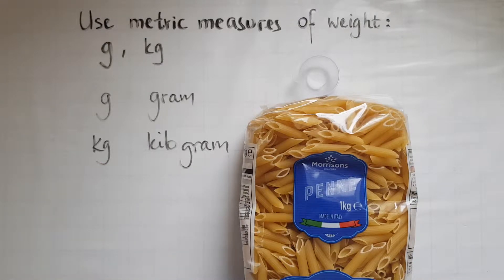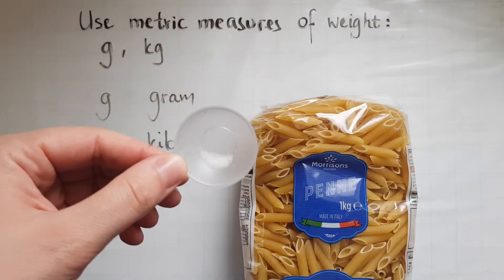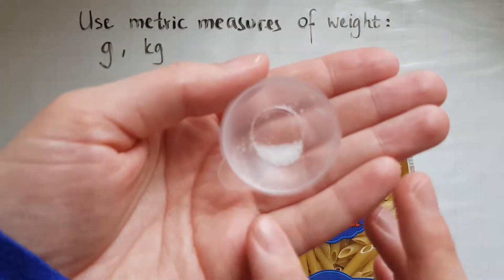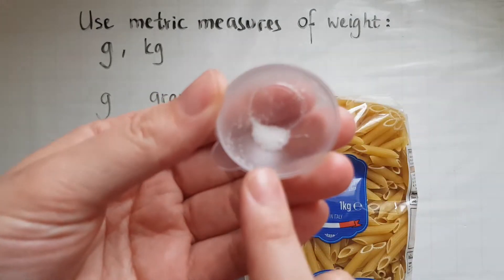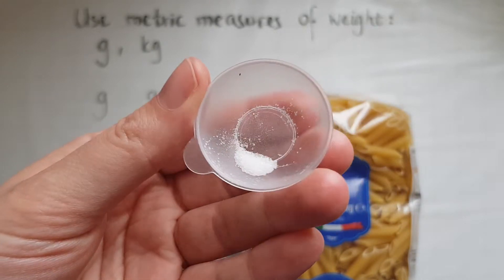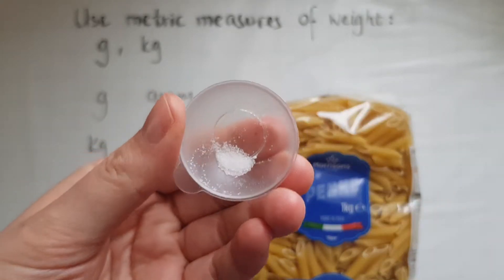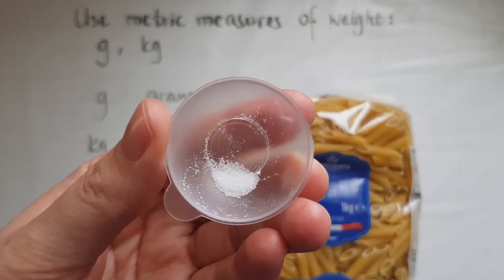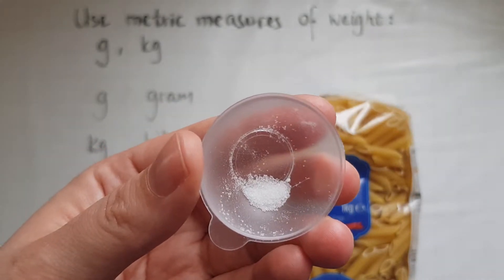Now we'll look at how much is actually a gram. I've got a few grains of salt here, and that is how much a gram is — just a few grains of salt. We also measure medicine in grams. Just like milliliters, when you get medicine it will tell you how much it weighs — how many milligrams it is.